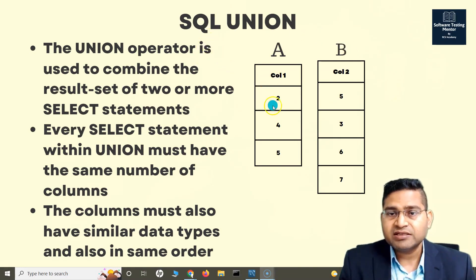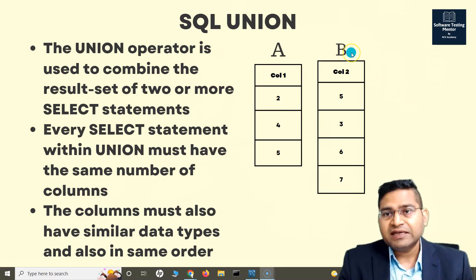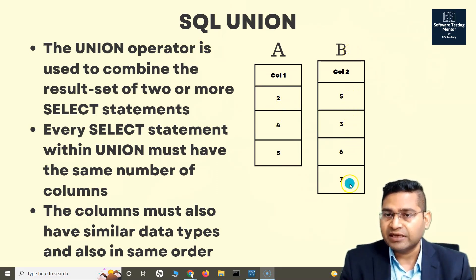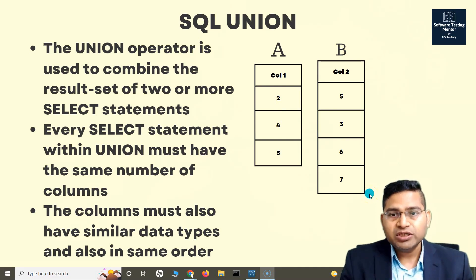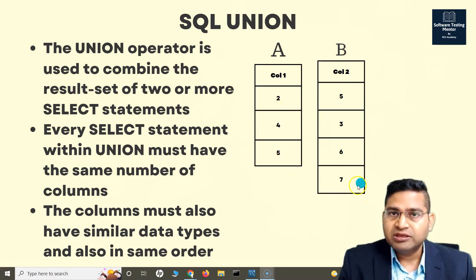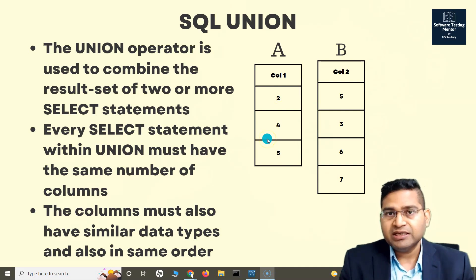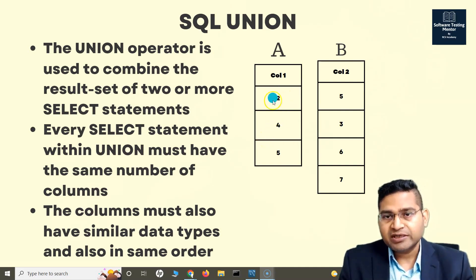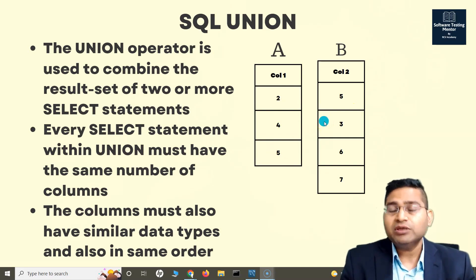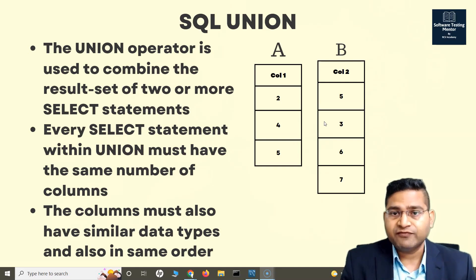So if I say SELECT * FROM A, the result will be 2, 4, and 5. And if I say SELECT * FROM B, the result will be 5, 3, 6, and 7. Now when I do the UNION operator, anything unique in both these tables will be returned — all values will be returned, but any duplicate values will be returned only once.